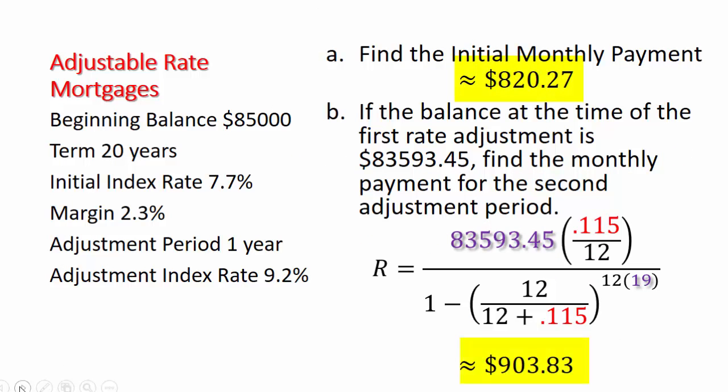So you can see that the payment has gone up by about $83 for the second adjustment period. I hope you found this video helpful. If you did, please remember to like it. You can also leave any follow-up questions or questions about other topics in the comment section below.